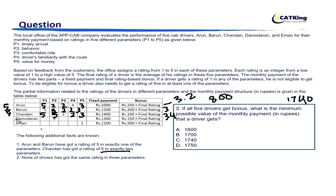For Damodaran, at least one 5 must be there for bonus eligibility. He already has 5 and 3 in two parameters. To minimize, assign 2, 2, and 3 to the remaining slots. Total = 5+3+2+2+3 = 15. Final rating = 15/5 = 3. Bonus = 3 × 150 = 450. Fixed = 1300. Total = 1750 for Damodaran. So Chandan still has the minimum at 1740.